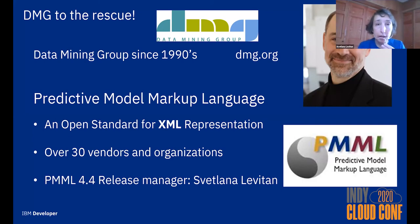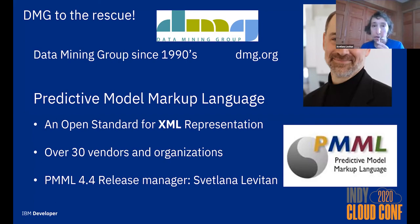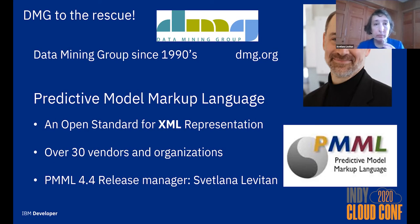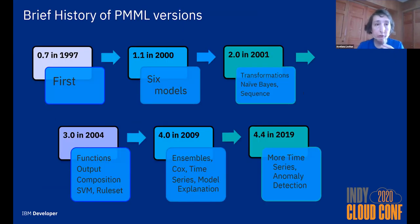One solution to this problem was created back in the late 1990s by the Data Mining Group. Professor Robert Grossman, then at University of Illinois in Chicago, realized this was a big challenge and got a grant from NSF to start a group of companies working on an open standard for predictive model deployment. The product of this group is Predictive Model Markup Language (PMML), an open XML standard for model representation, now supported by over 30 vendors and open source organizations. I've been a release manager for the last two releases and have been working with it since about 2001.